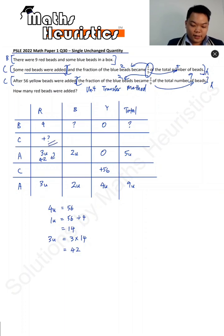So if this is 42, the number of red bits that were added would have to be 42 minus 9 to give you 33. Alright.